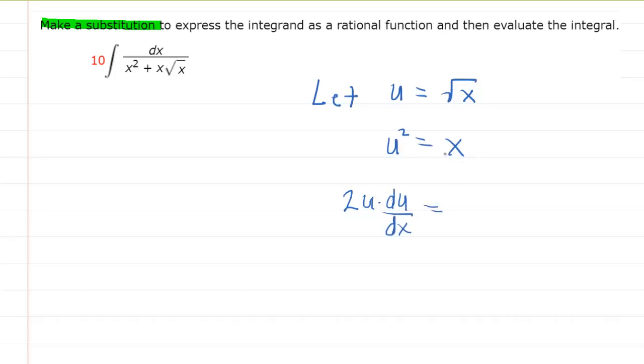And then on the other side, the derivative of x with respect to x, of course, is just 1. Then we can multiply both sides of this equation by dx so that the dx cancels here on the left side. Now we can see that 2u du is equal to dx.